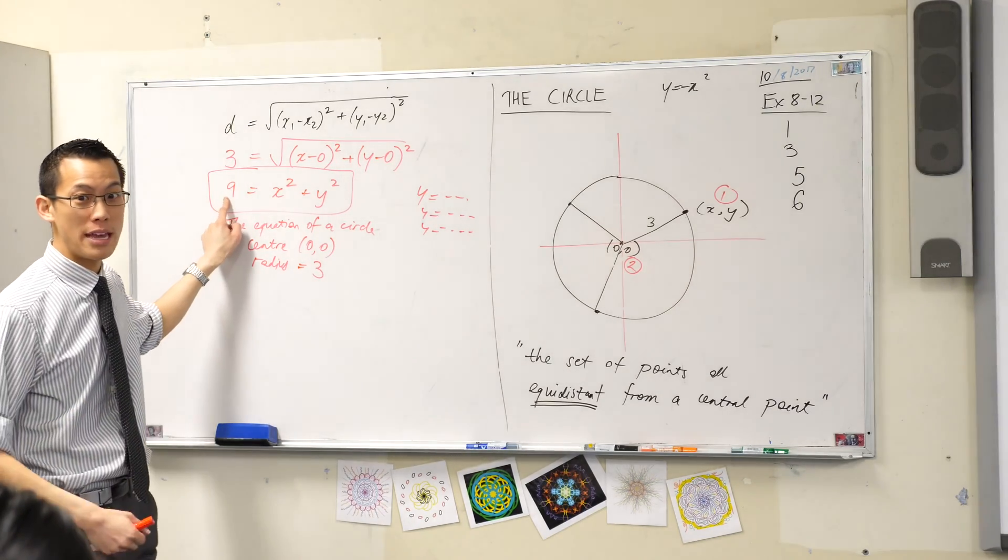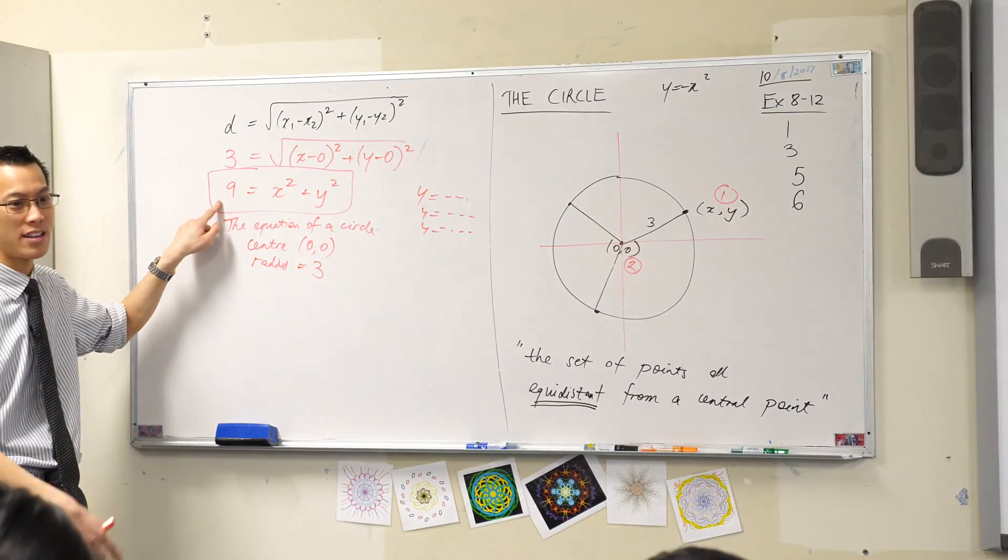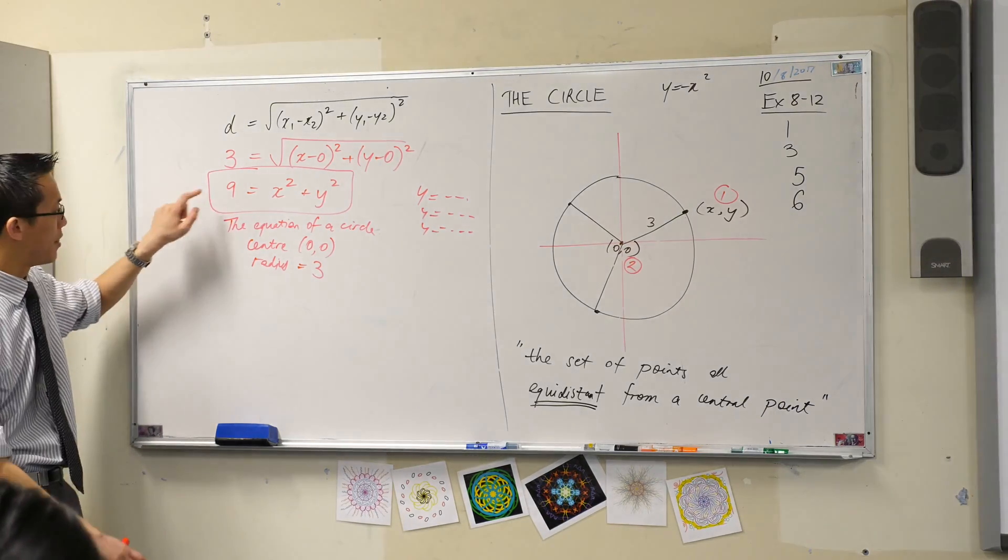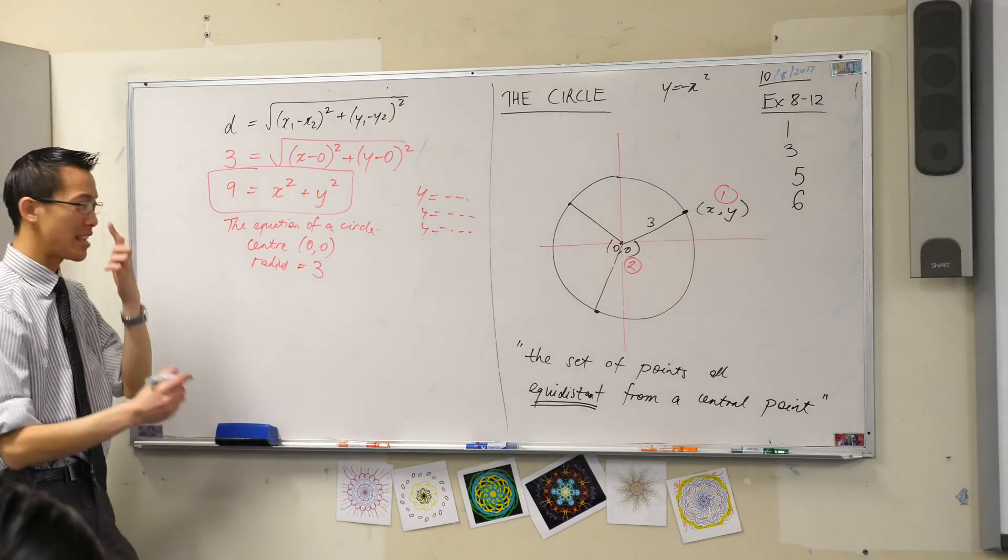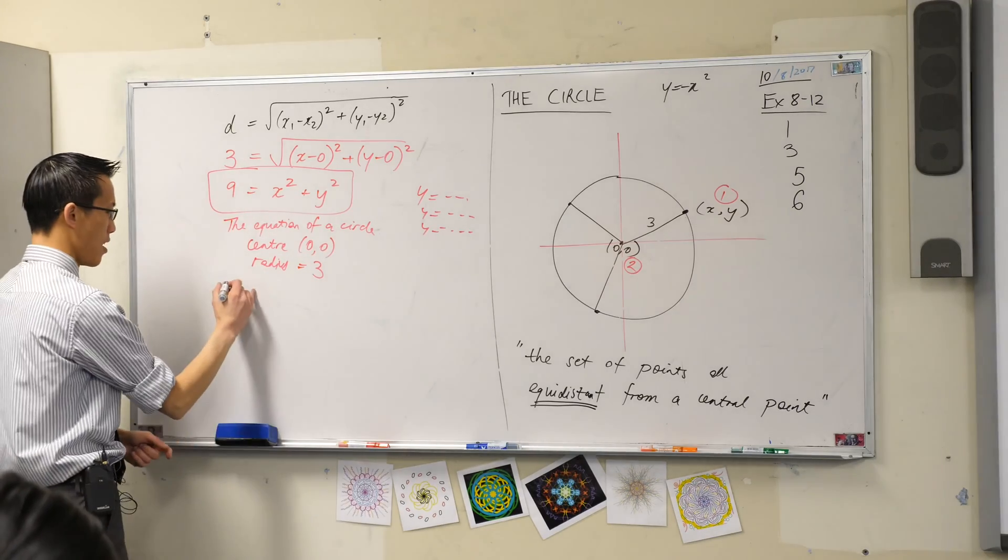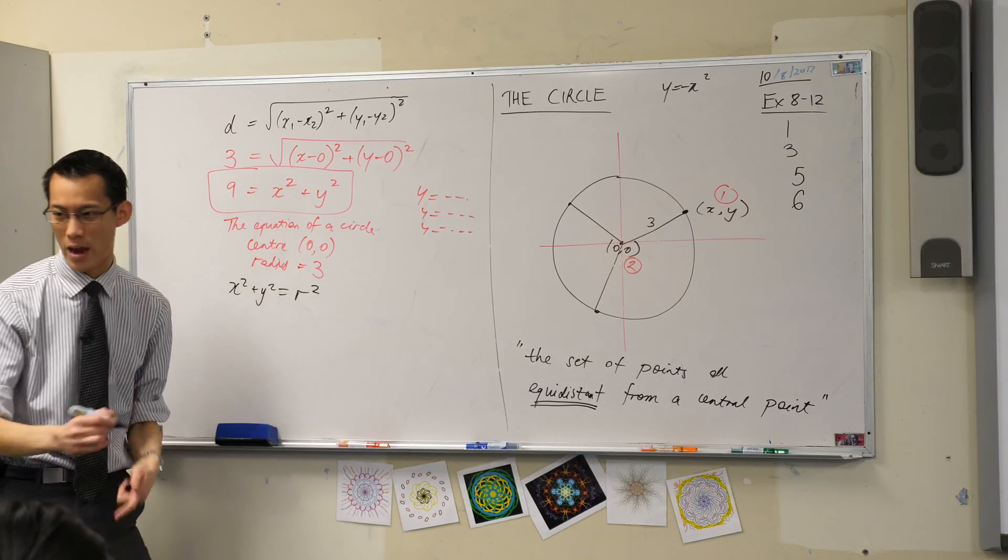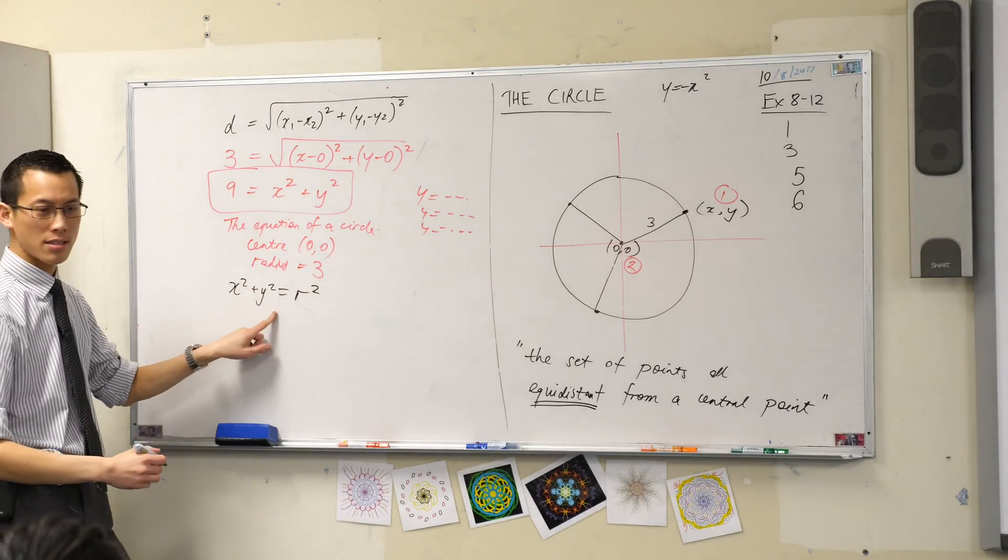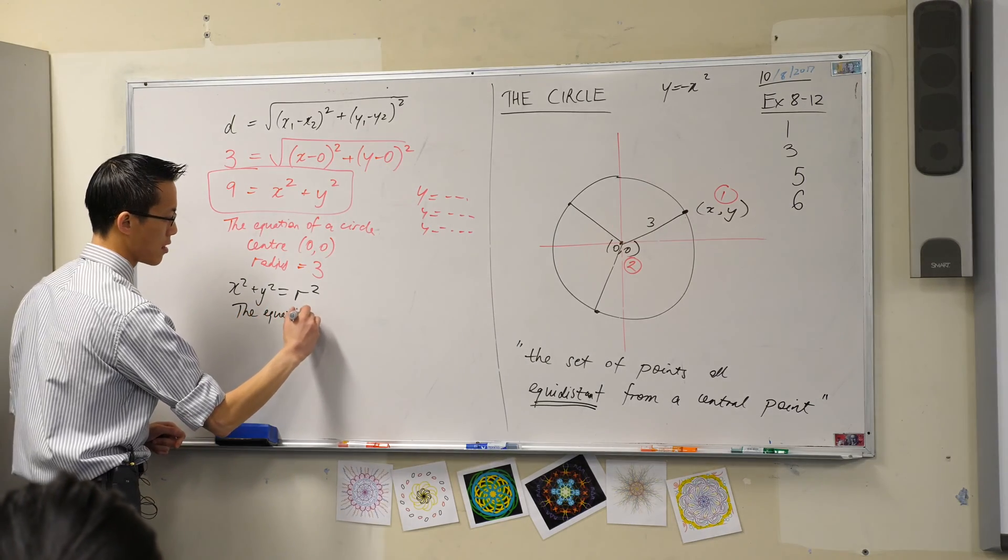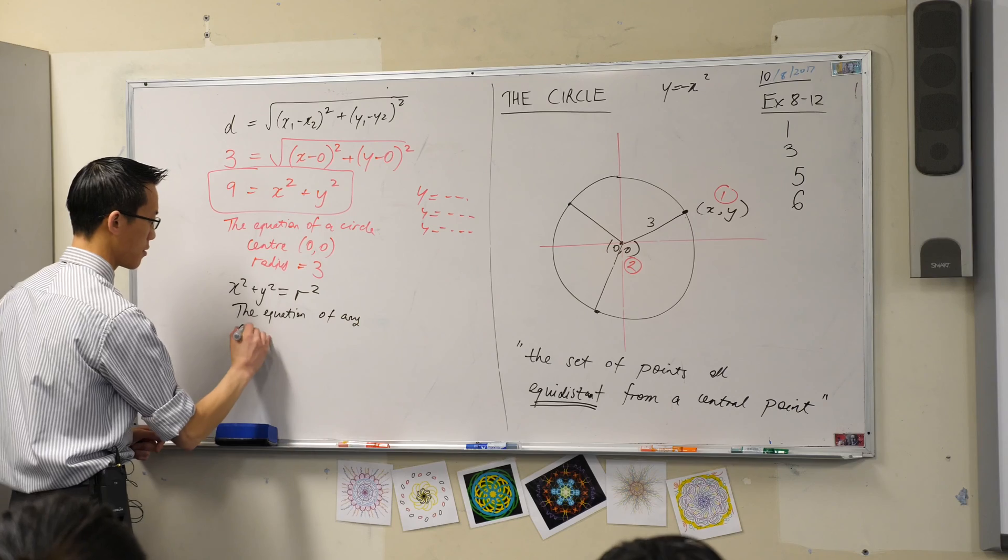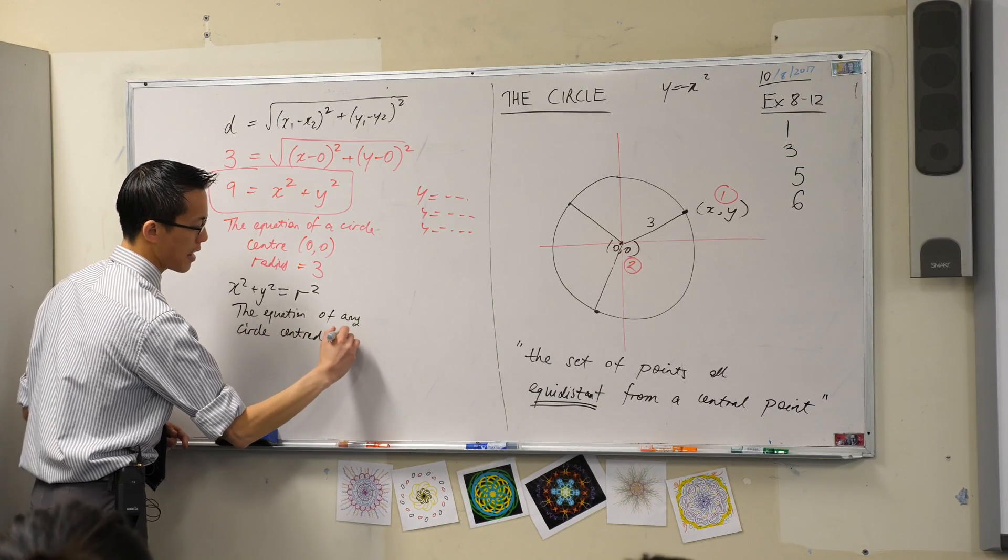If you wanted the radius to be 10, then this final number will be 100. If you wanted the radius to be whatever, this is whatever squared. So underneath here you can say—I'm going to switch sides—x squared plus y squared equals r squared. This is the equation of any circle centered at the origin.